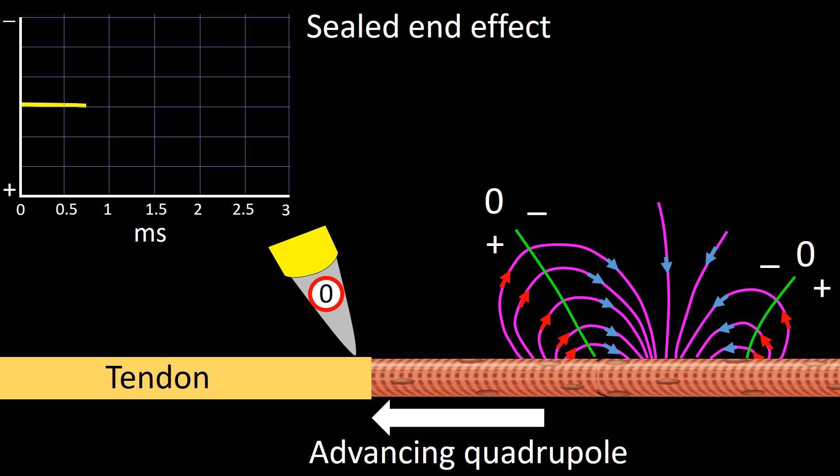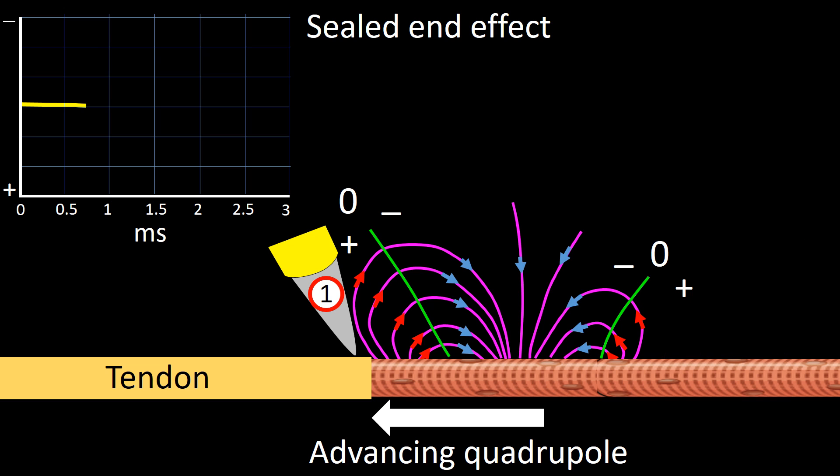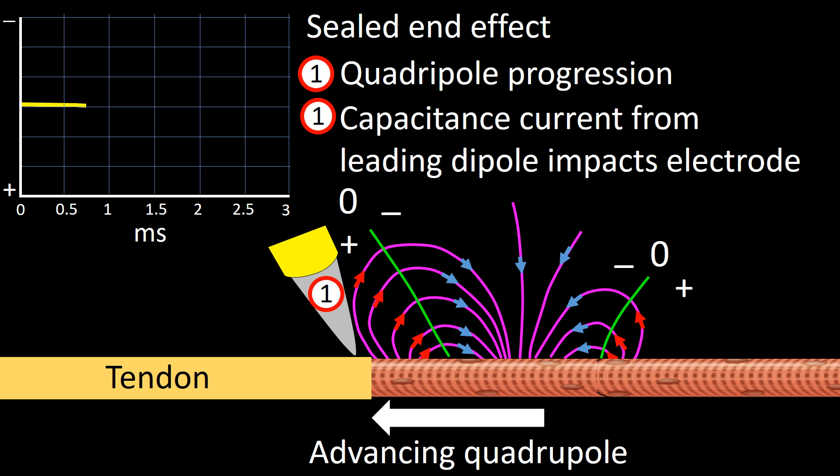At stage 0, the quadrupole is too far from the electrode to impact it, so the tracing is running at baseline. Stage 1 is characterized by quadrupole progression to the tendon's edge, and as a consequence, the capacitance current from the leading dipole impacts the electrode. At the display panel, the tracing curves down, reflecting the positive value of the advancing capacitance current.